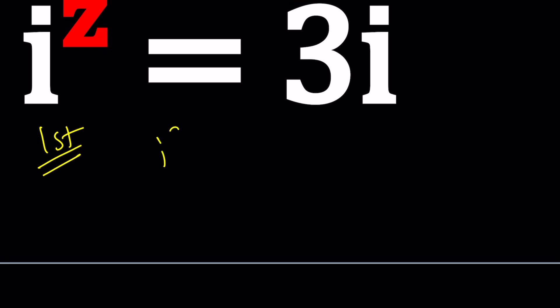So we have i to the z equals 3i. First method, I want to put the i's together. I want to get all the i's together on one side and then maybe leave the number on the right hand side. In other words, the 3. How can I do that? I can basically divide both sides by i. i is not 0 so I should be able to divide. Can I do this? Sure, why not?